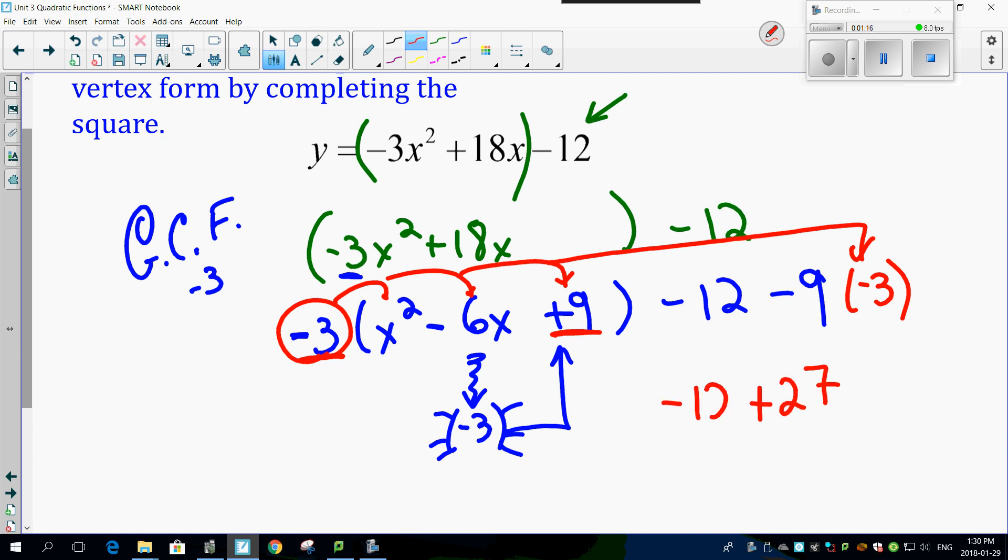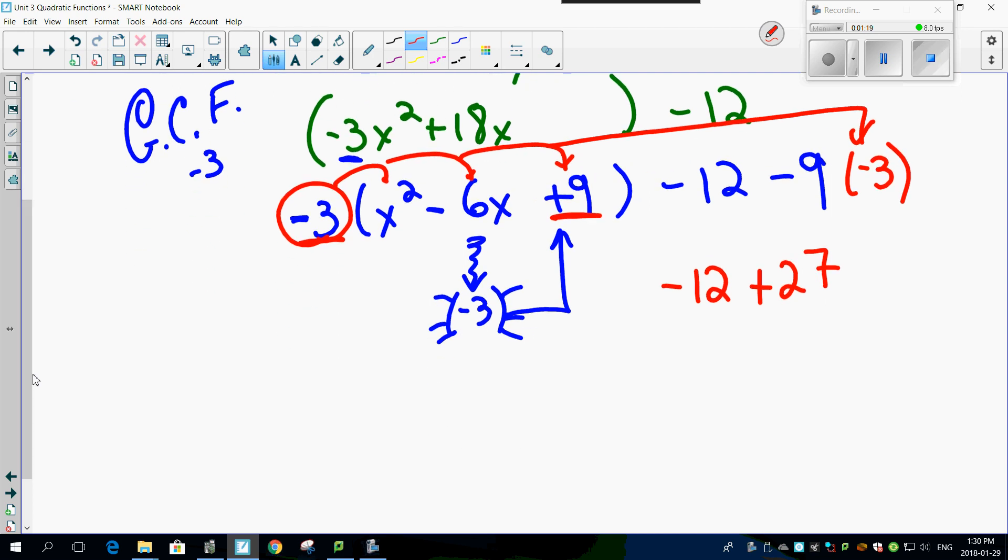There's the minus 12, which is still out there. Now, let's clean it up. There's the magic number. There's the GCF. GCF's still up front. This now, real simple. x minus 3 is now squared, because that's your magic number, right? Minus 12 plus 27 works out to be positive 15. There you go.